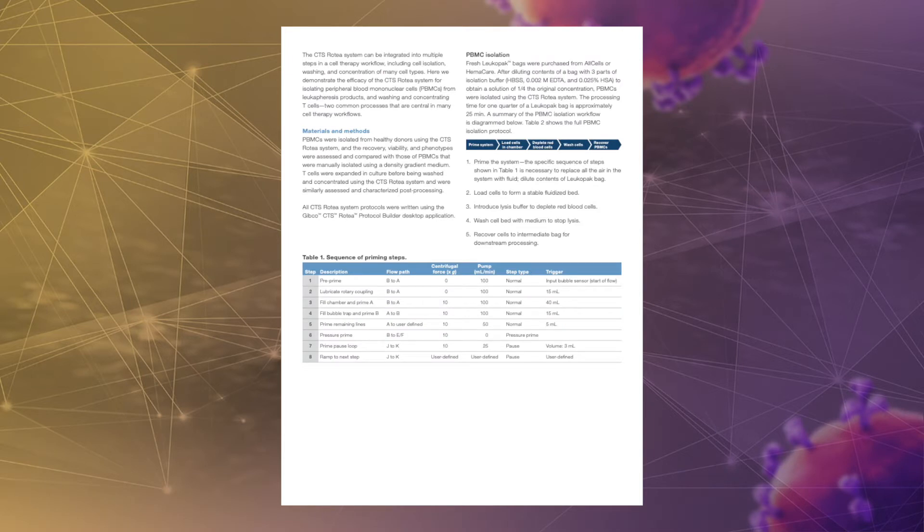In this application note, we demonstrate the efficacy of the CTS-Rotea system for isolating peripheral blood mononuclear cells, or PBMCs, from leukophoresis products and washing and concentrating T cells, two common processes that are central in many cell therapy workflows.